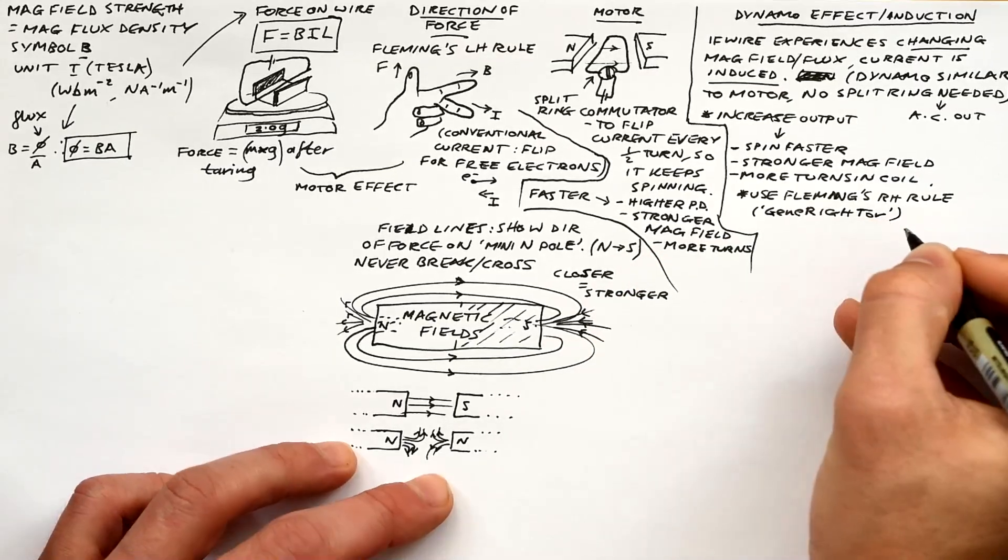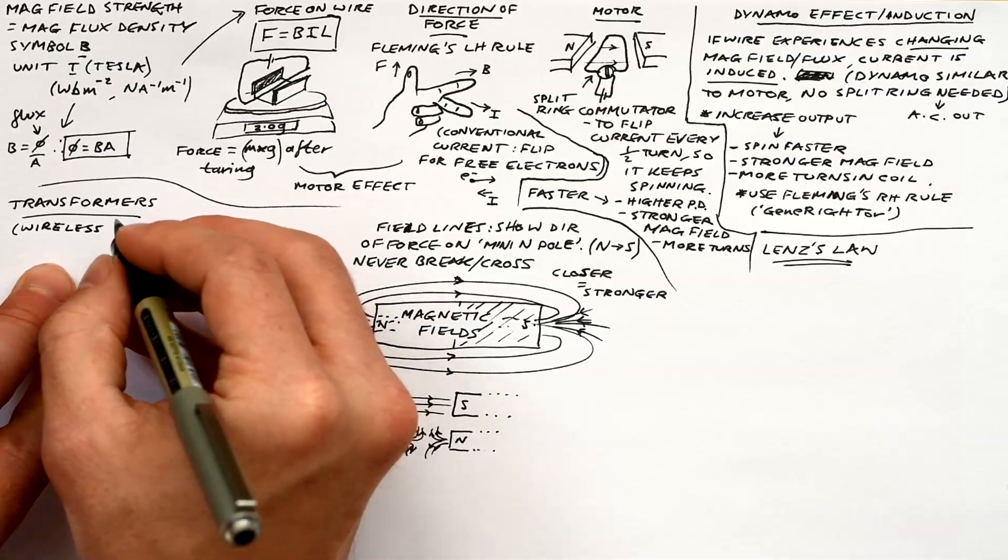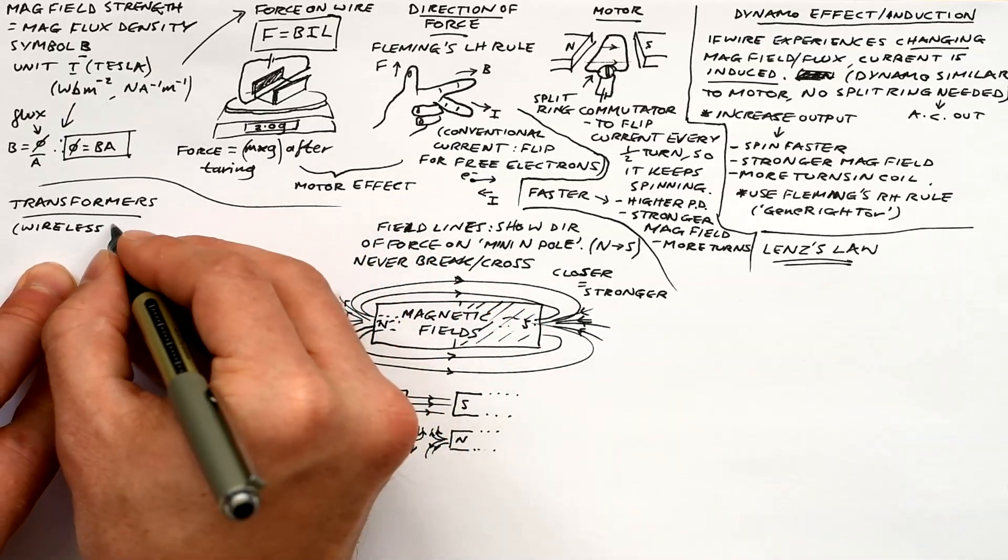At A-level, if we want to find out the direction of the current, then we use Fleming's right-hand rule. Before we go into Lenz's Law, let's have a look at transformers because that's a GCSE as well.